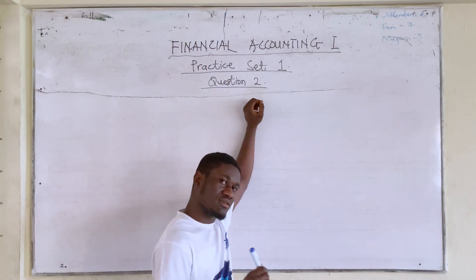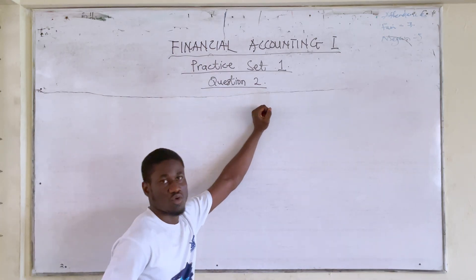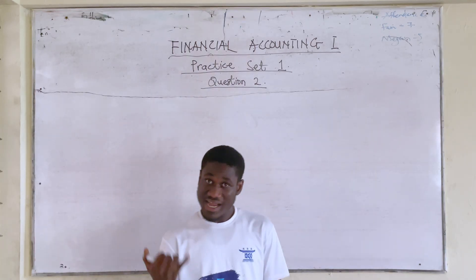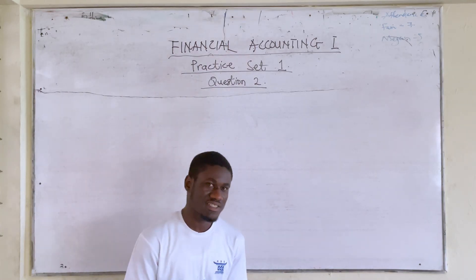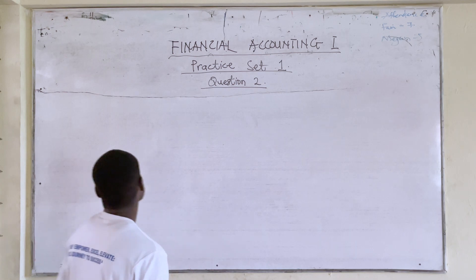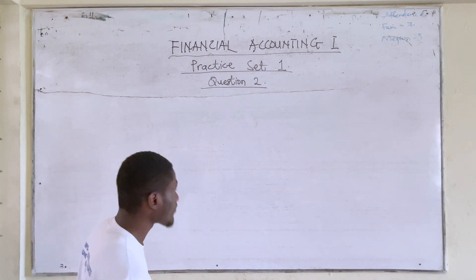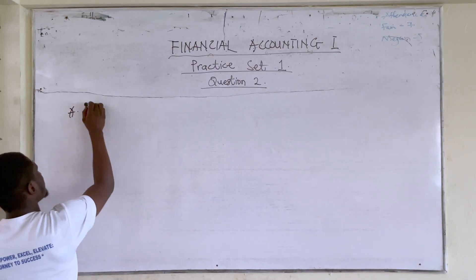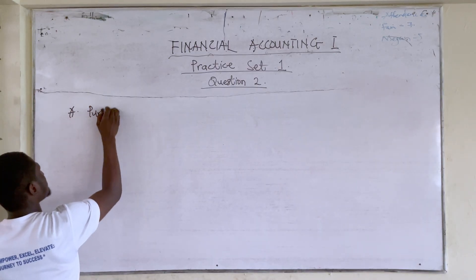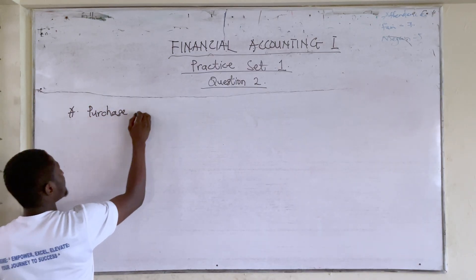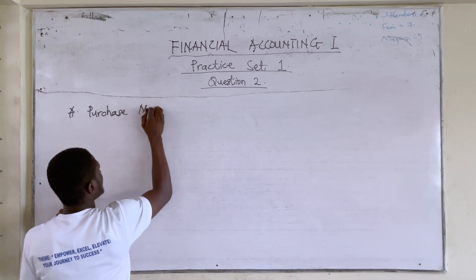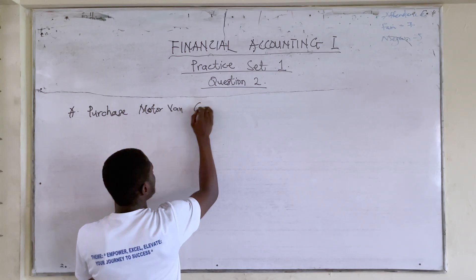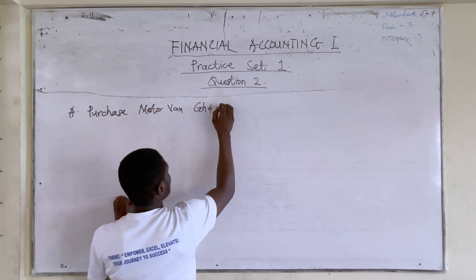We purchased motor bank with cheque, because our motor bank has increased by 10,000 and our bank has decreased by 10,000. So transaction A is: purchased motor bank, 10,000 by cheque.